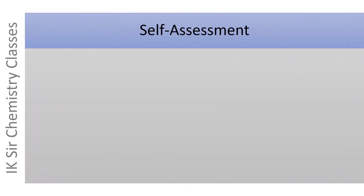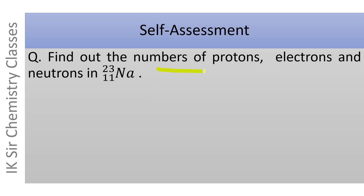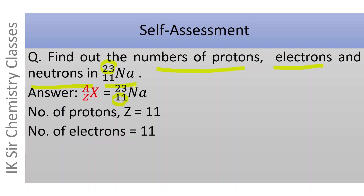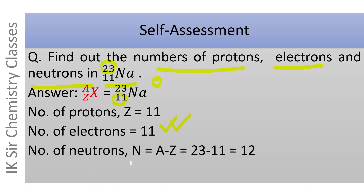Time for another self-assessment: find the number of protons, electrons, and neutrons in Na with atomic number 11 and mass number 23. Here, the number of protons Z = 11. Since there is no charge on the sodium atom, the same number of electrons (11) will also be present. The number of neutrons N = A − Z = 23 − 11 = 12. Thus this isotope contains 11 protons, 11 electrons, and 12 neutrons.